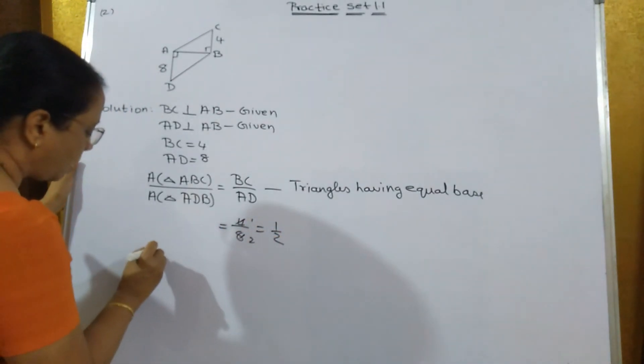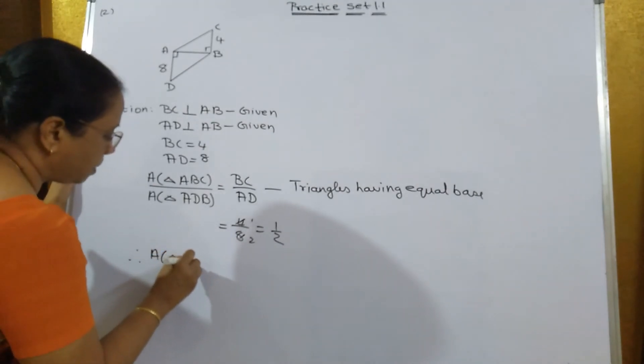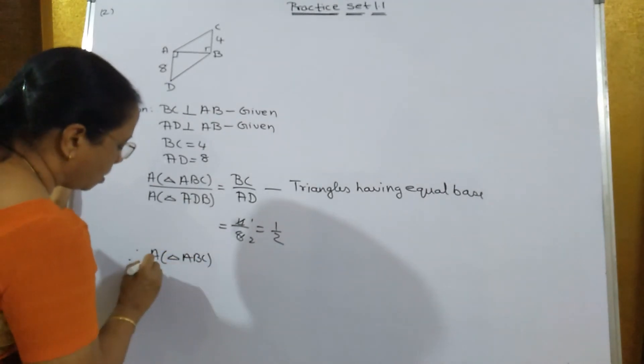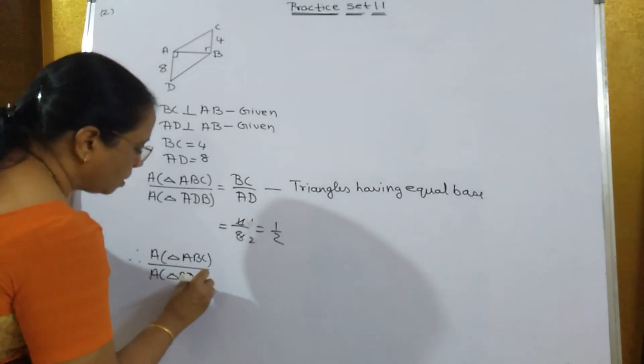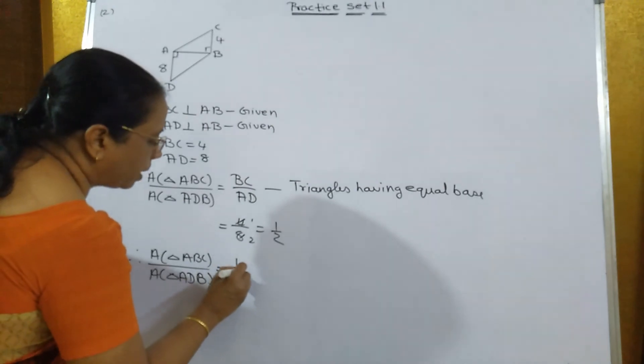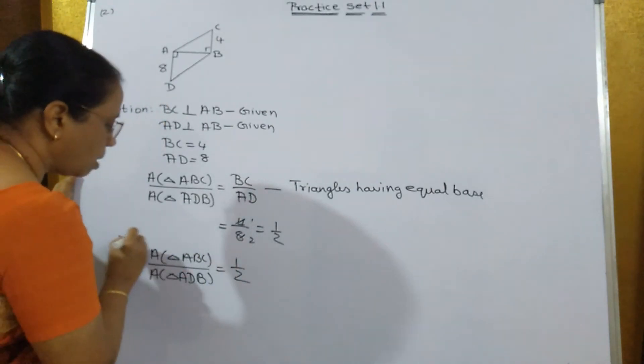Therefore, area of triangle ABC upon area of triangle ADB is equal to 1 upon 2. So this is the answer.